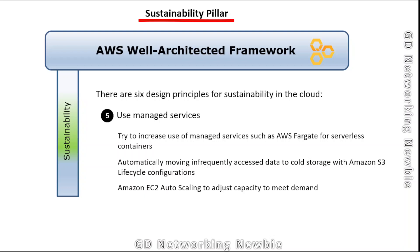Also use Amazon EC2 Auto Scaling to adjust capacity to meet demands. Auto scaling means you can scale up or scale down — increase or decrease EC2 instances to meet your demands. EC2 instances should not be sitting idle using energy unnecessarily, so it is recommended to have auto scaling enabled.